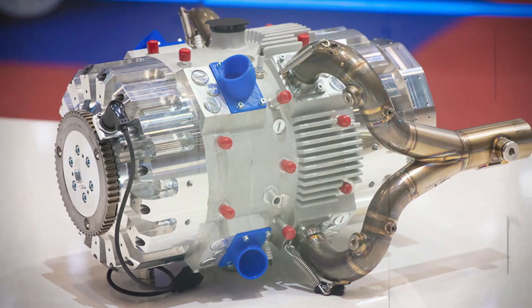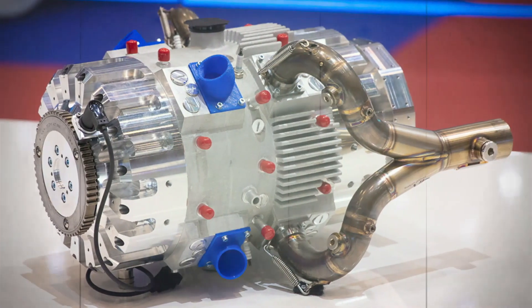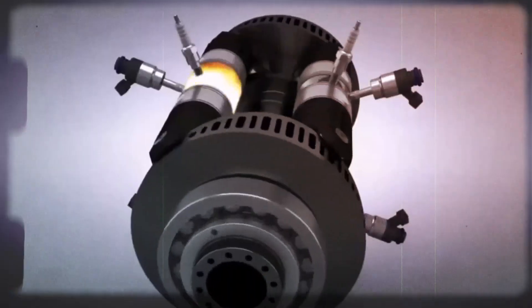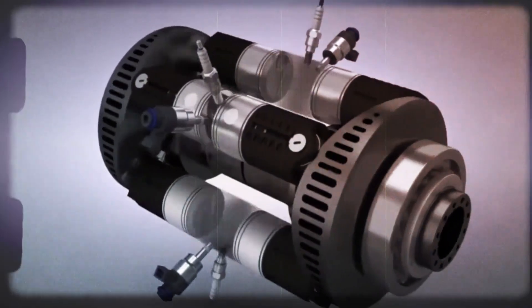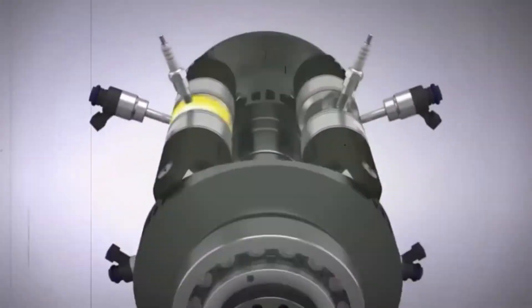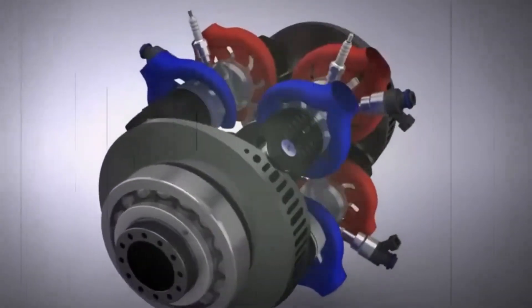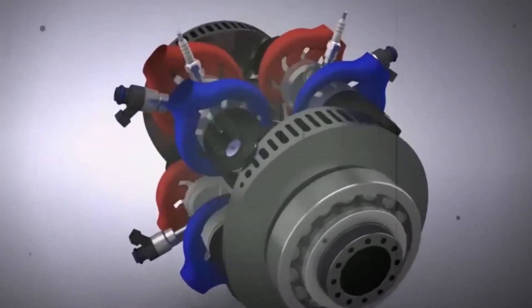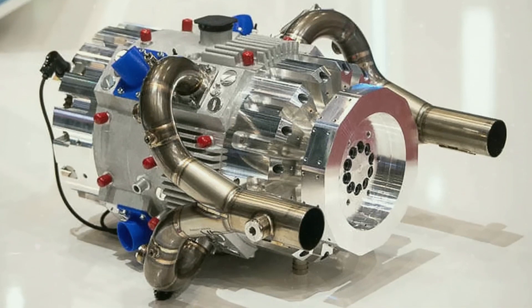However, a point of potential confusion is the engine's nomenclature as a single-stroke or one-stroke engine. In truth, it operates on a two-stroke cycle. The first stroke sees the combustion and exhaust processes occurring almost concurrently, while the second stroke encompasses the intake and compression phases. Labelling it as a one-stroke engine would be misleading.